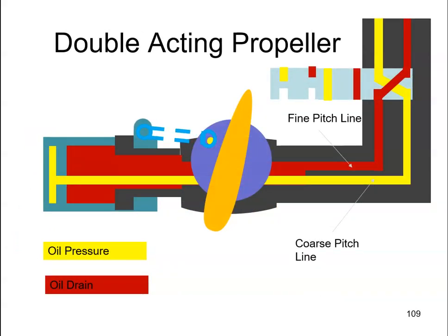But a double-acting propeller, it can be slightly different. You can still have the spring, but there is another way of doing it also. Here we have a double-acting propeller and we're assuming that the pilot valve is already in the coarse pitch position, the overspeed position.